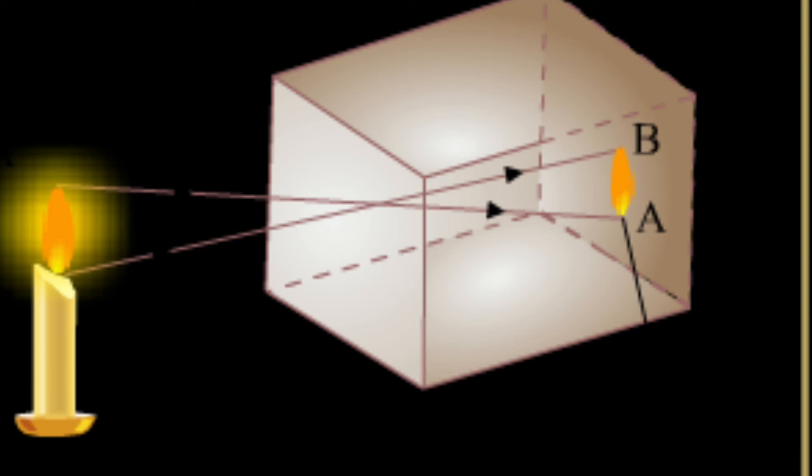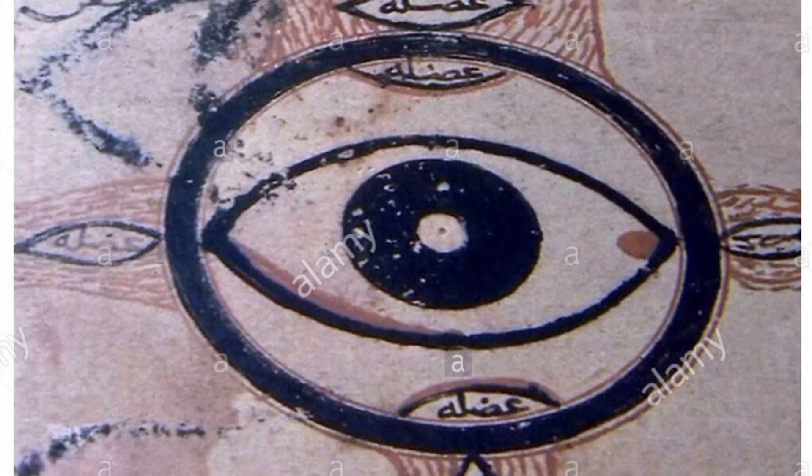The law of optics is now common knowledge, but when Alhazen made the discovery it was foundational to the future of optics and cameras. When light passes through a small hole into a dark room, instead of scattering, it crosses through the hole and onto the parallel surface as an upside-down image of the picture outside of the dark room.